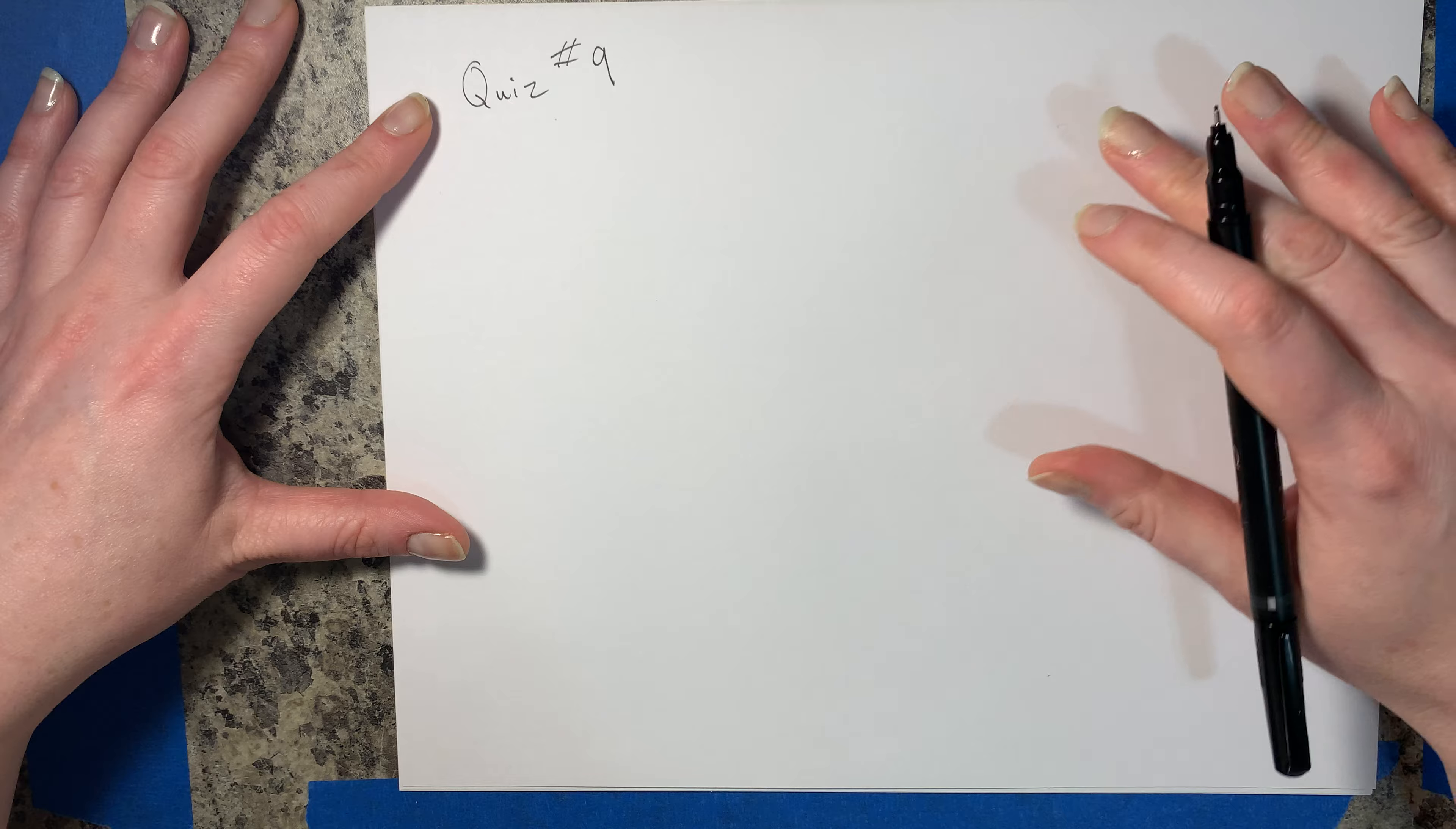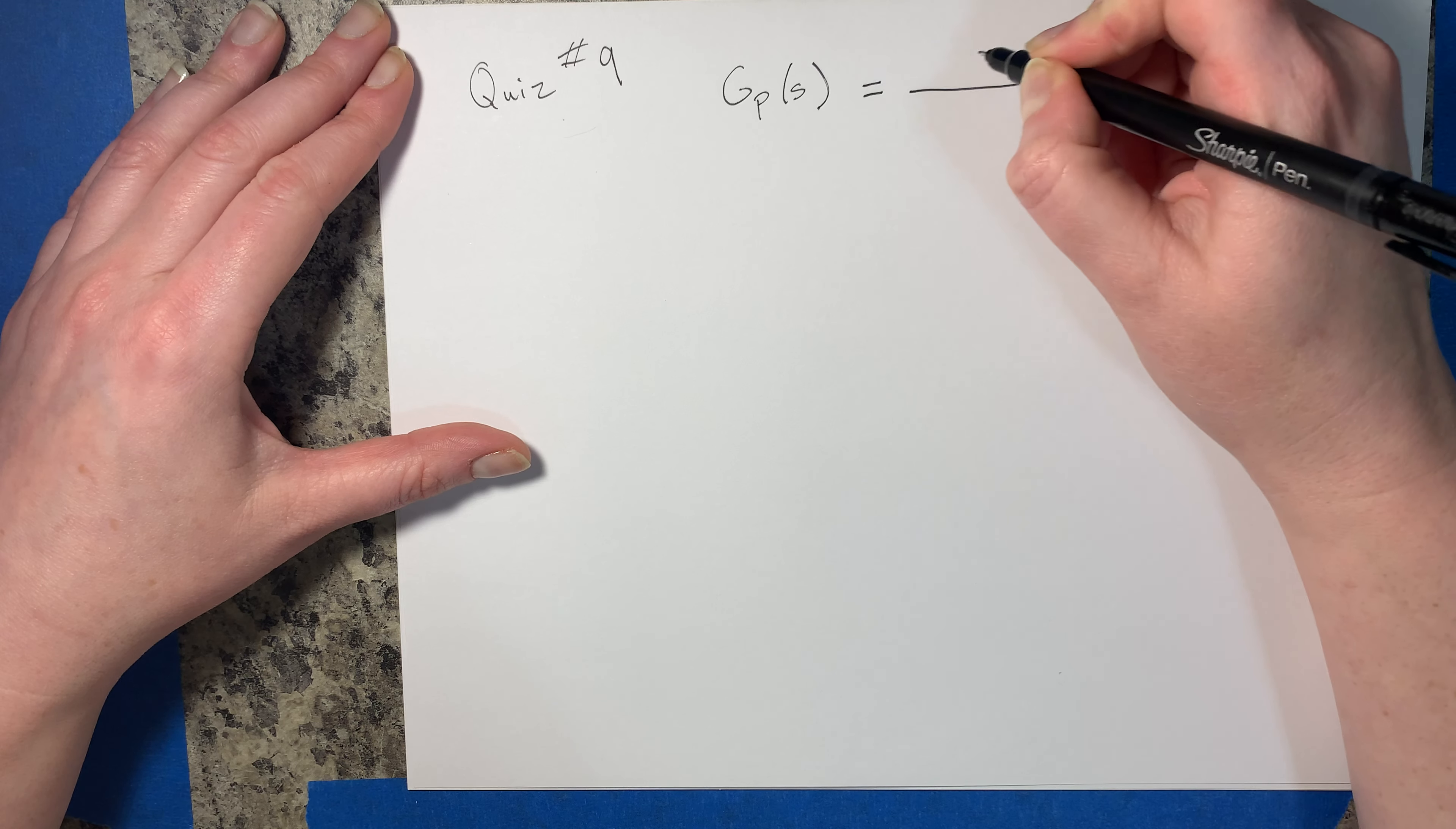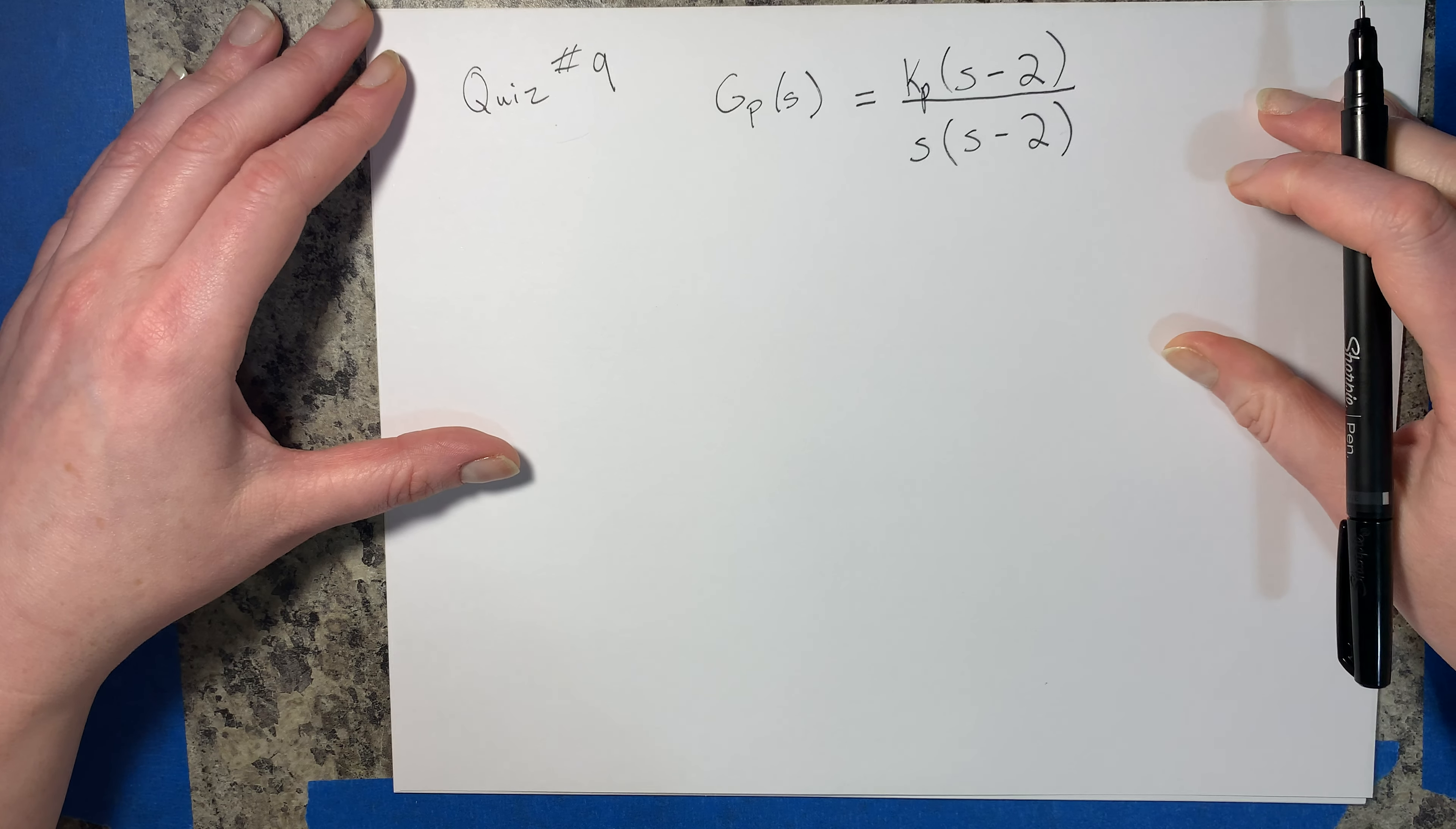was about pole-zero cancellation. So if you have, let's say a GP of S, and we have a pole and a zero, let's say we have something at a positive two here, and we'll add some value KP, some gain.